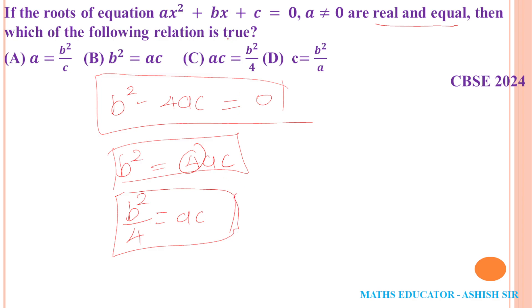You can see this option here. ac=b²/4. Both answers are the same because you can see left side, right side, they are the same.